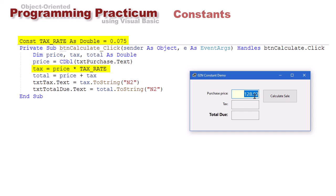So we're going to take the purchase price, in this case $120.92, times 0.075, or 7.5%. Calculate the tax, and then the total is going to be the tax and the purchase price together. Let's watch this run.